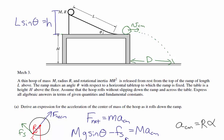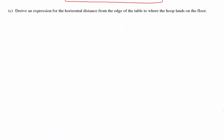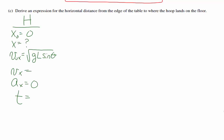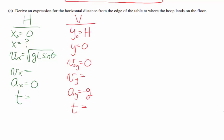I set up columns for horizontal and vertical quantities. In the horizontal direction: initial position is zero, initial horizontal velocity is the v_cm from part B — the square root of gL sine theta — and there's no horizontal acceleration. In the vertical direction: the hoop starts at height H, ends at height zero, the initial vertical velocity is zero since it was moving horizontally only, and the vertical acceleration is negative g.